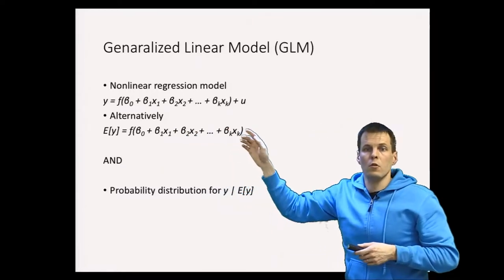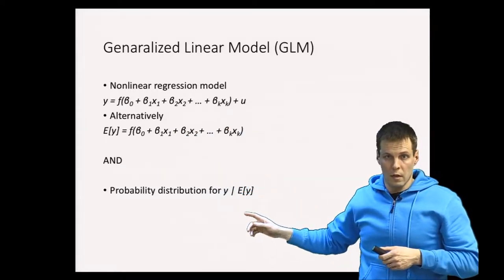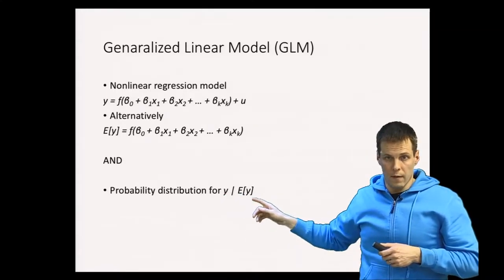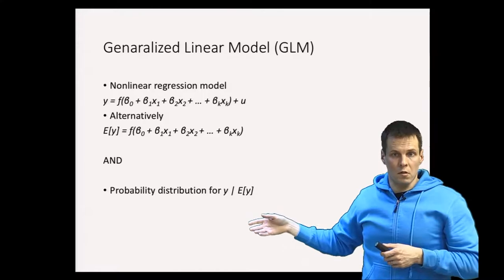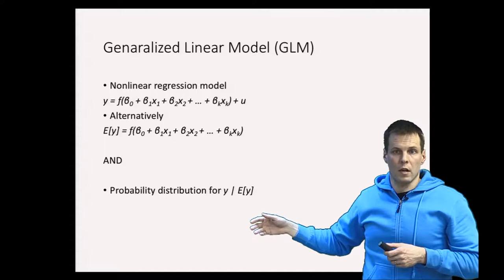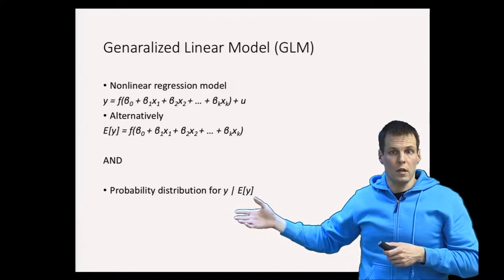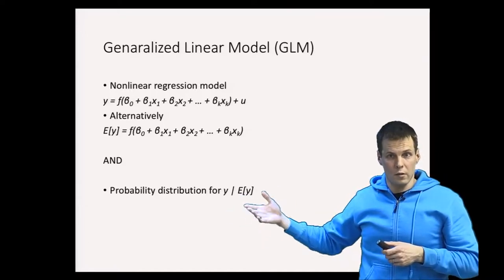We also need a probability distribution for the dependent variable given the expected value. In logistic regression analysis we use the Bernoulli distribution, which is ones and zeros only. In normal regression analysis we use the normal distribution. In other models we use other distributions.